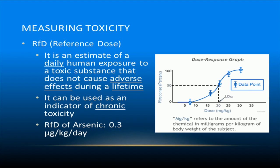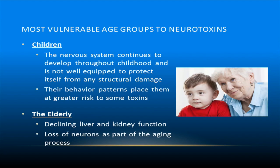The most vulnerable age groups to neurotoxic chemicals are children and the elderly. Critical neurodevelopmental processes occur in the human central nervous system during fetal development and the first three years after birth. Organ growth occurs in spurts, and it is during key growth periods that organ systems are most vulnerable to permanent damage. Young children are also at increased risk for exposure to environmental toxins because they exhibit a high degree of hand-to-mouth activity that increases their chances of ingesting paint chips, house dust, and soil that is contaminated with lead, insecticides, or other toxins. The elderly are at risk because of declining liver and kidney functions, as well as the gradual loss of neurons as part of the aging process.